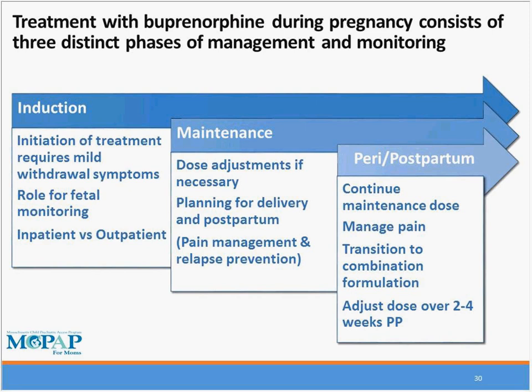Buprenorphine is as effective as methadone on a number of criteria including maternal weight gain, rates of cesarean, and abnormal presentation, and is especially important that it's equally effective in decreasing substance use and positive urine screens. Buprenorphine treatment has three phases. Induction requires the patient to be in mild withdrawal before initiating, and depending on gestational age and obstetric factors, consideration of whether fetal monitoring is needed and whether induction can occur in inpatient or outpatient settings should be made on a case-by-case basis. During maintenance, dose adjustment may be necessary as pregnancy advances.